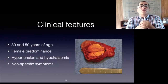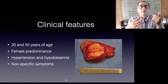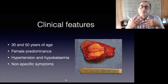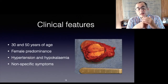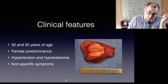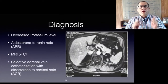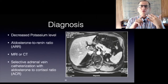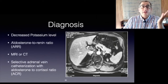Most patients are between 30 and 50 years of age with a female predominance. Apart from hypertension and hypokalemia, patients complain of non-specific symptoms such as headache, muscle weakness, cramps, intermittent paralysis, polyuria, polydipsia, and nocturia. The key feature of biochemical diagnosis is the assessment of potassium level, though as noted these are not very reliable.